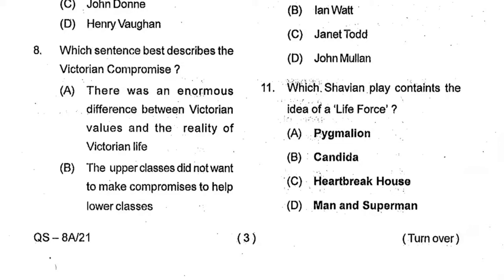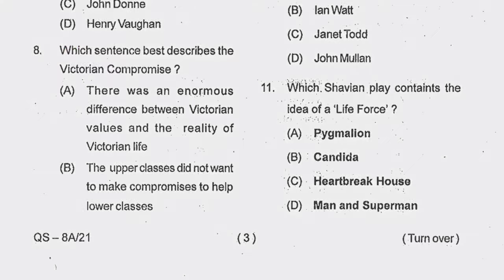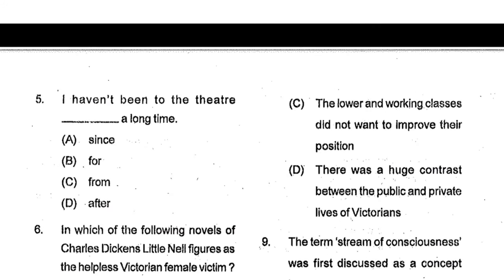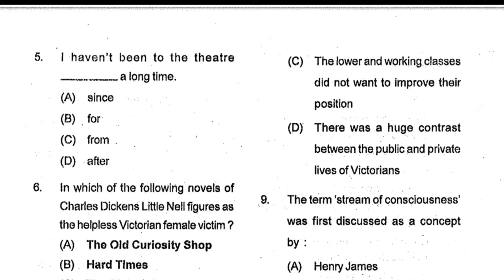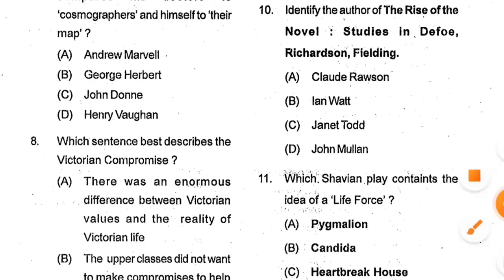Question number 8: Which sentence best describes the Victorian compromise? Option A: There was an enormous difference between Victorian values and the reality of Victorian life. Option B: The upper classes did not want to make compromises to help lower classes. Option C: The lower working classes did not want to improve their position. Option D: There was a huge contrast between the public and private lives of Victorians. Option A is the correct answer.